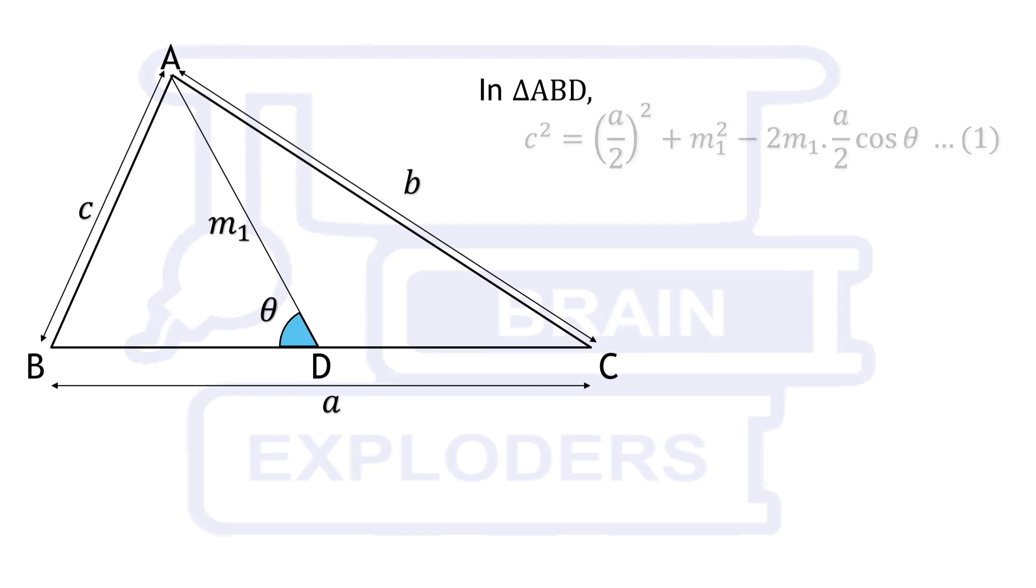So in triangle ABD, C squared is equal to A by 2 whole squared plus M1 squared minus 2M1 times A by 2 times cos theta.